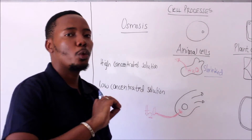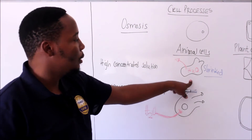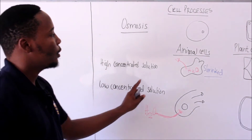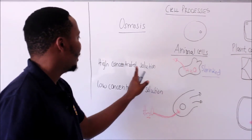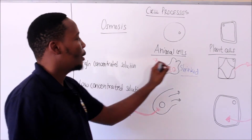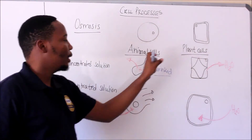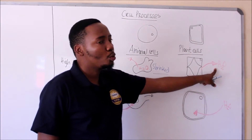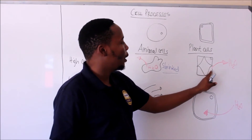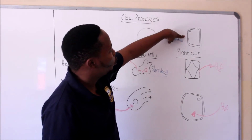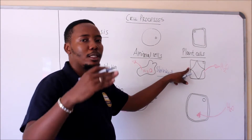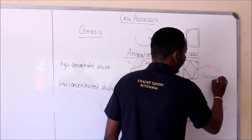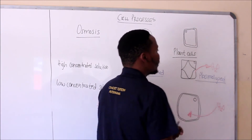When an animal cell loses water to a solution, it is going to shrink because the water is going to the solution. Now if you take a plant cell and place it in a highly concentrated solution, again this cell has a high water potential and the solution has a low water potential. As a result, water moves out of the cell into the solution. If you look at the two membranes, here they are close to one another, but then the other membrane is sort of detaching from the cell wall. When a cell is in this state, it is said to be plasmolyzed.